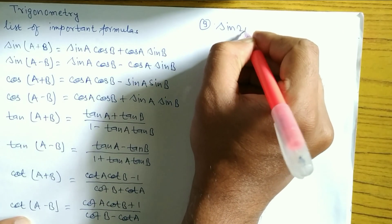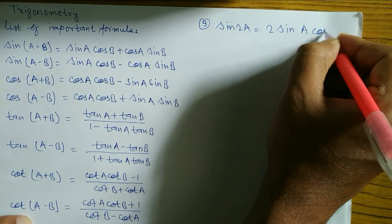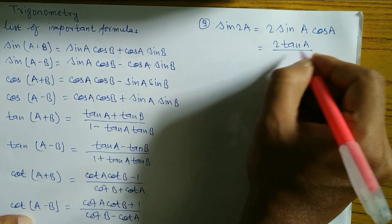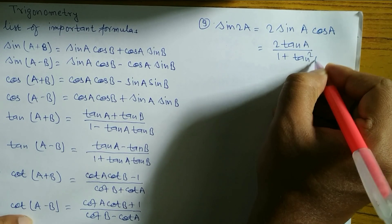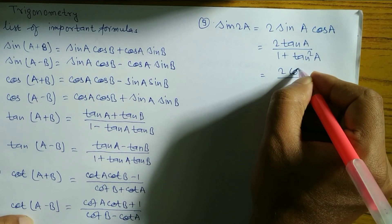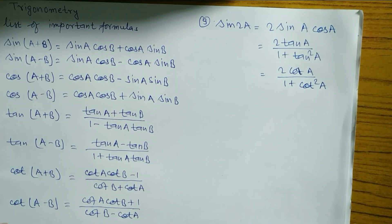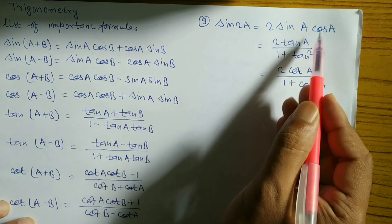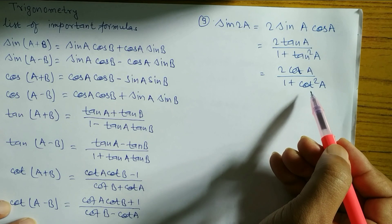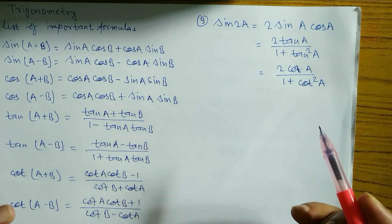Sin 2A. We have three formulas of sin 2A: first, 2 sin A cos A; second, 2 tan A / (1 + tan² A); and third, 2 cot A / (1 + cot² A). According to the problem, you have to use the appropriate formula.